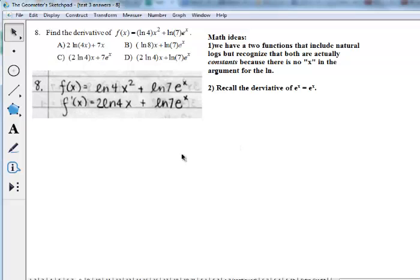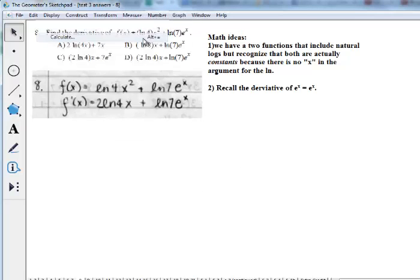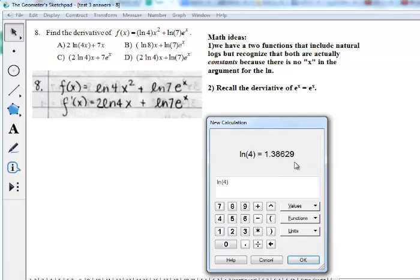For example, if I want to calculate the ln of 4, that's a number, 1.3826. And that's 1.3826 times x squared.